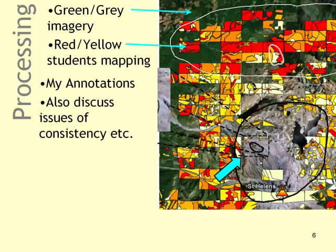It's important to discuss consistency, as people record polygons in different ways. Some students added lots of polygons to their cells and some very few, creating inconsistencies. But it's okay to discuss that and say this is a disadvantage of VGI.